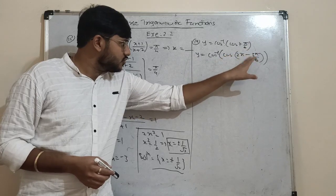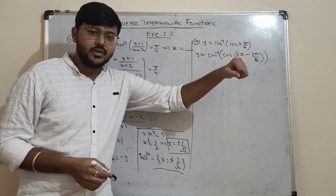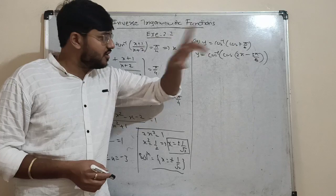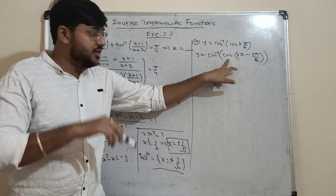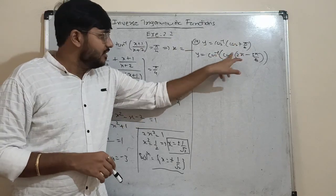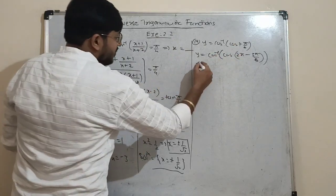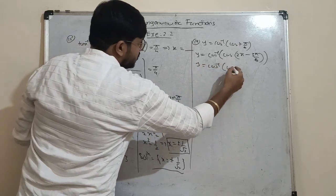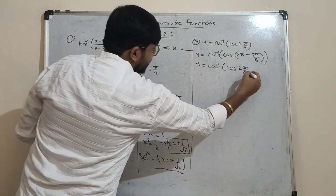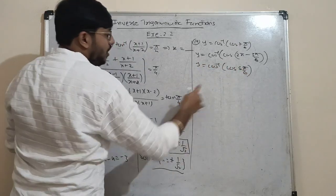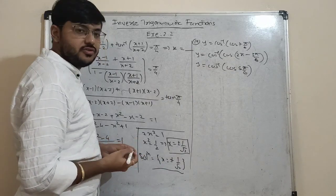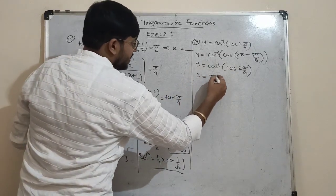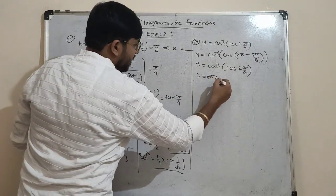2π minus an angle falls in the 4th quadrant where cosine is positive, and the conversion with 2π gives cos as it is. So it becomes cos⁻¹(cos(5π/6)). Since 5π/6 ∈ [0, π], we can remove function and inverse, and the answer is 5π/6.